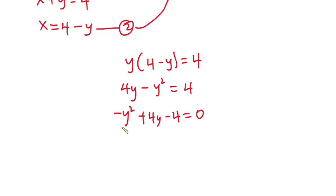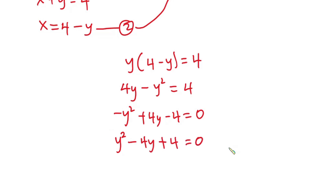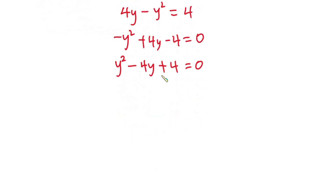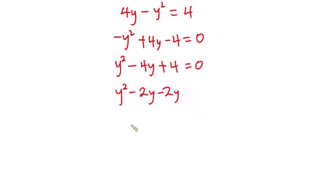Now let's multiply through by negative 1, so we have y squared minus 4y plus 4 is equal to 0. This equation can also be written as y squared minus 2y minus 2y plus 4 is equal to 0.